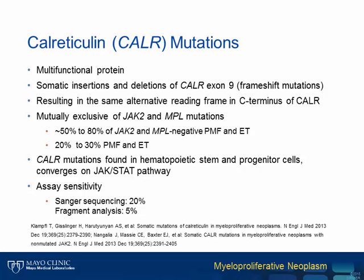Next, CALR mutations. CALR is a multifunctional protein, and the described pathogenic mutations are all somatic insertions and deletions involving CALR exon 9, the last exon of CALR. These are always frameshift indels, resulting in a specific alternative reading frame in the C-terminus of the mutant CALR protein. In-frame mutations are of doubtful clinical significance and most of them are germline alterations. CALR mutations are mutually exclusive of JAK2 and MPL mutations, occurring in approximately 20 to 30% of PMF and ET cases, and about 50 to 80% of JAK2 and MPL negative PMF and ET cases.